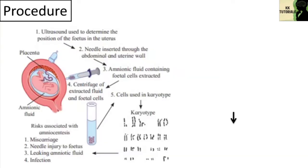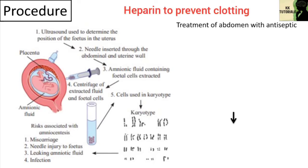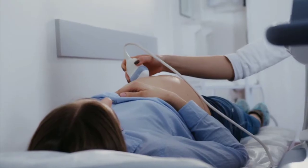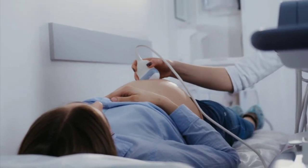What is the procedure? The abdomen is first treated and cleaned with antiseptic before the procedure. Sterile gel is also used on the abdomen before scanning with a sterile ultrasound probe. These measures are taken to reduce infection risk. The tools used in the procedure are coated with heparin to prevent clotting.